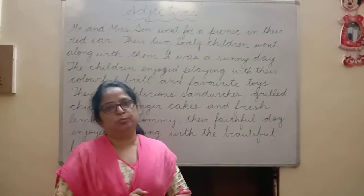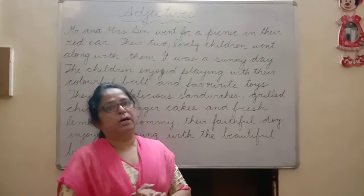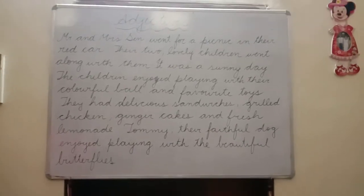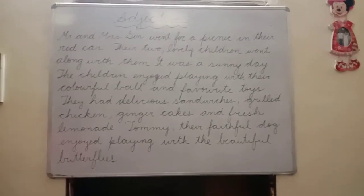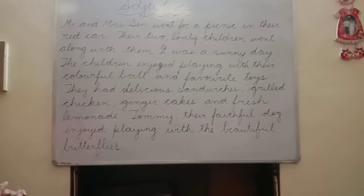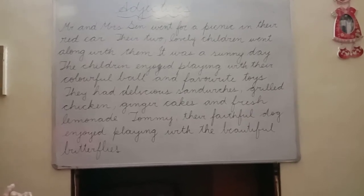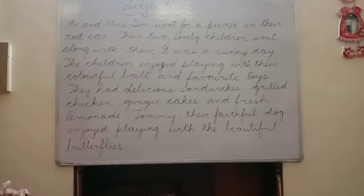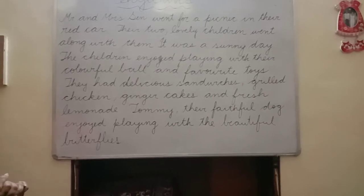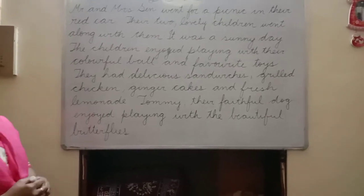I have written a passage here on the board and I am going to read it out for you. Please pay attention, and then we are going to underline the describing words. Mr. and Mrs. Sane went for a picnic in the red car. Their two lovely children went along with them. It was a sunny day. The children enjoyed playing with their colourful ball and favourite toys. They had delicious sandwiches, grilled chicken, ginger cakes and fresh lemonade. Tommy, their faithful dog, enjoyed playing with the beautiful butterflies.